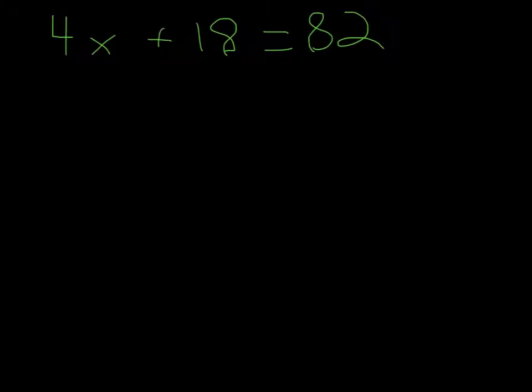Here is another example. 4x plus 18 equals 82. Now, I balanced the equation. 18 minus 18 equals 0, and 82 minus 18 equals 64. So now, I have 4x equals 64.